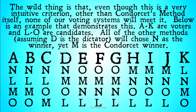Below is an example that demonstrates this. A through K are voters — yes, there are a lot, but we need them to prove all of the methods — and L through O are candidates. All of the other methods, assuming D is the dictator, will choose N as the winner. Yet M is in fact a Condorcet Winner. M will beat every single other candidate in one-on-one matchups, yet all of our other methods decide that N is the best choice.